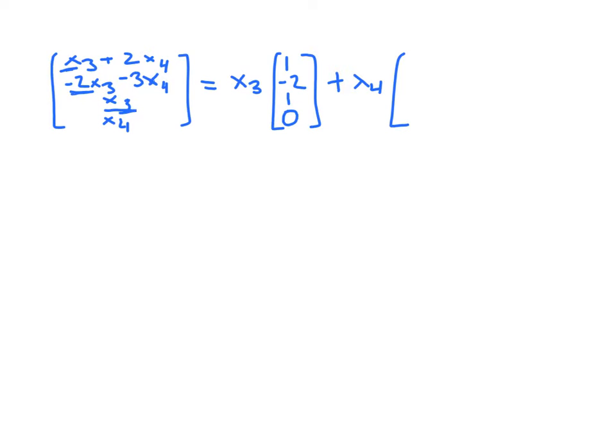Okay. So now we just look at the coefficients this time for x4. So we have 2x4 in the first position, negative 3x4 in the second position, no x4s here, and then 1x4 in the fourth position.